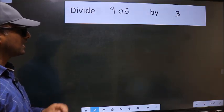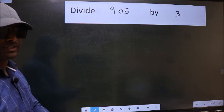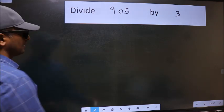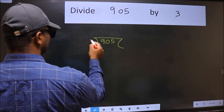Divide 905 by 3. To do this division, we should frame it in this way. 905 and 3 here.